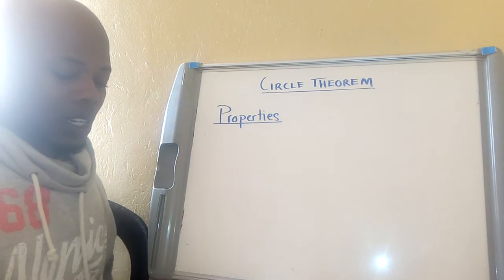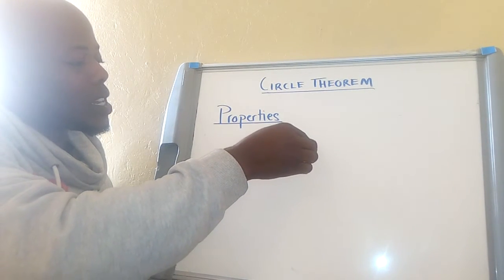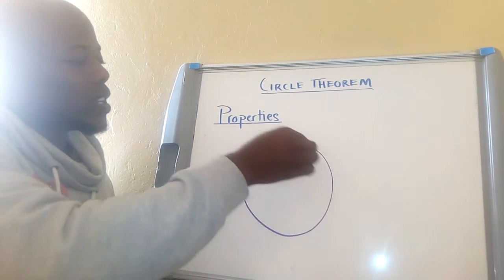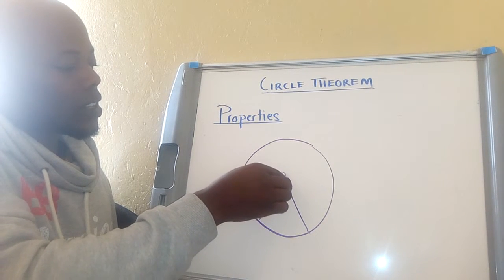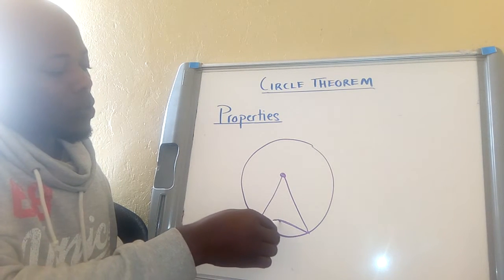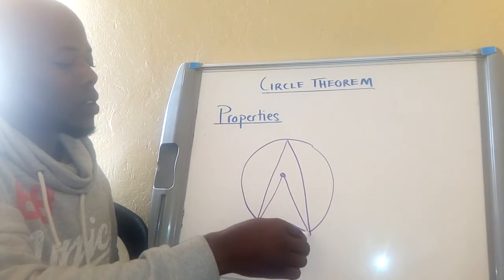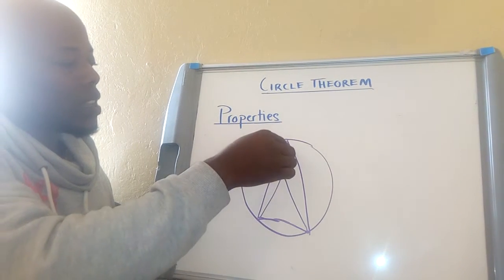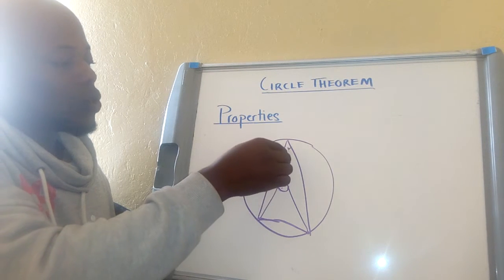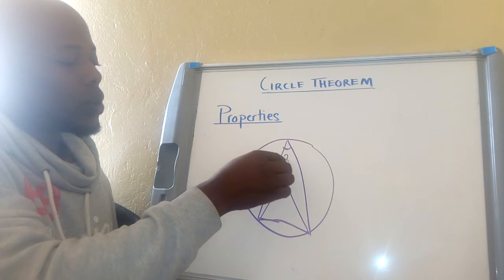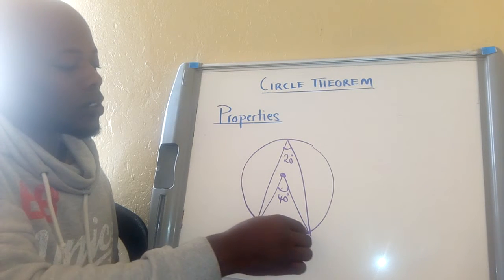The third property says the angle coming from the same segment to the center — this is the center — and the angle formed up here: the angle at the center is twice this angle. If this angle is 20 degrees, the angle at the center will be 40 degrees, because they are coming from the same segment.